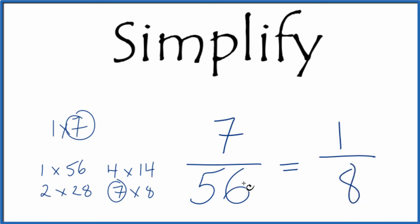And we've simplified 7/56 down to 1/8. You can't reduce this any further. And these are equivalent fractions. 7 divided by 56, or 1 divided by 8, they have the same value. It's just that we've simplified 7 over 56 down to 1/8.